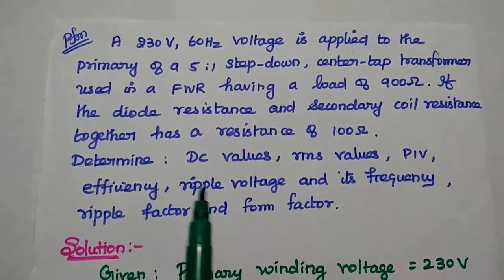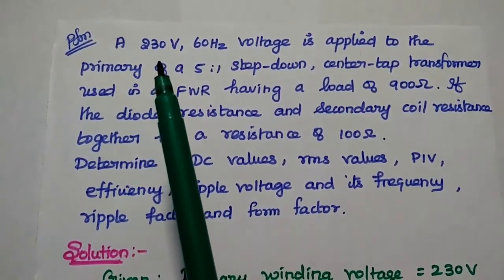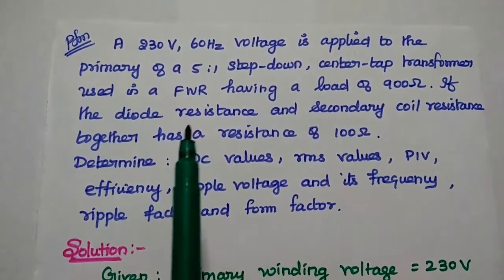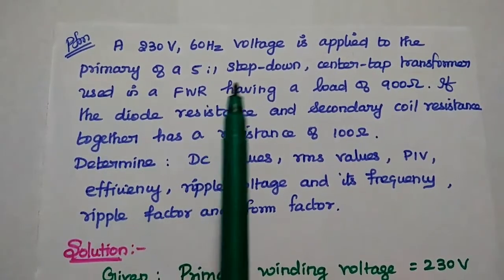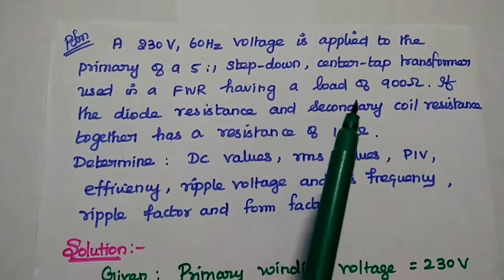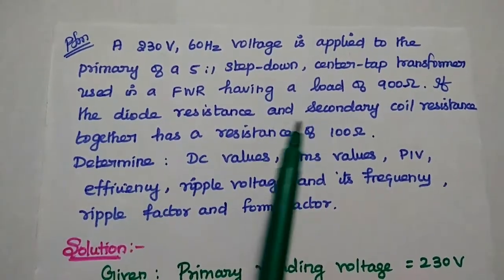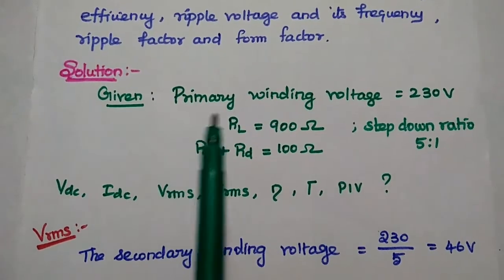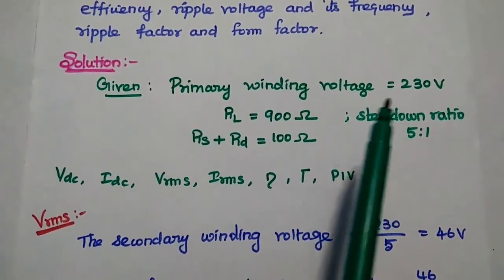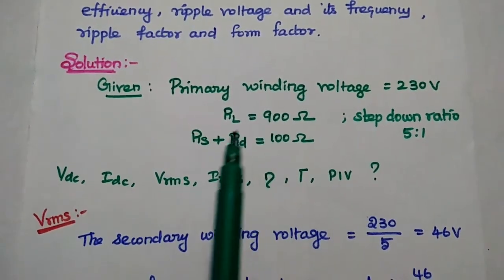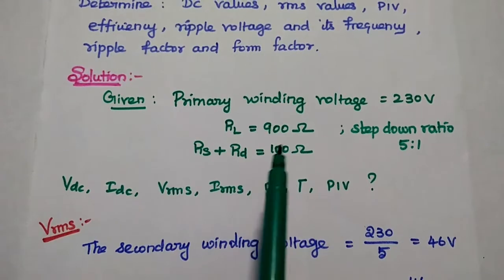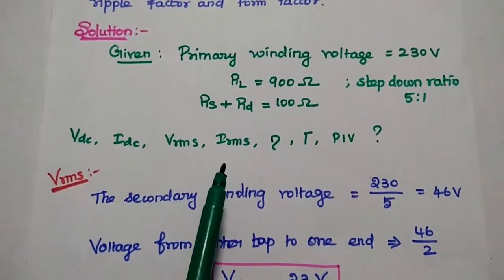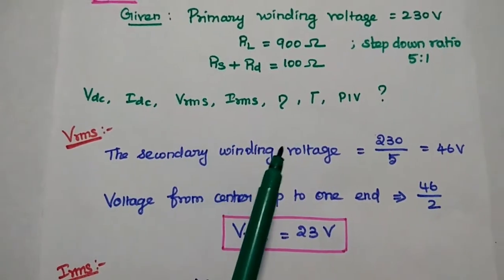In the solution part, first we have to write the given data. The input voltage given to the primary winding of the transformer is 230 V. The step-down ratio is 5:1. The diode resistance and the secondary coil resistance together is 100 Ω. The load resistance RL is 900 Ω. We are going to find the DC values, RMS values, efficiency, ripple factor, and peak inverse voltage.